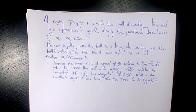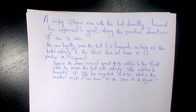It says a rugby player runs with the ball directly toward his opponent's goal along the positive direction of an X axis. He can legally pass the ball to a teammate as long as the ball's velocity relative to the field doesn't have a positive X component.